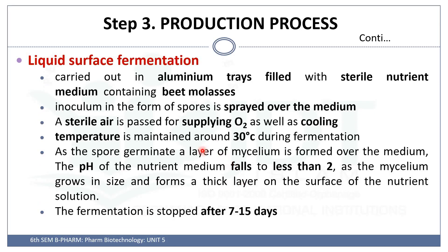The next method is liquid surface fermentation. As the name indicates, liquid media is used. These are carried out in aluminum trays filled with sterile nutrient media containing beet molasses. Spores are inoculated, and sterile air should be maintained for the supply of oxygen and for cooling. Temperature should be maintained around 30 degrees Celsius. During this process, there will be germination and formation of a layer of mycelium. The pH drops to less than 2.5, and fermentation is carried out for 7 to 15 days for optimal citric acid production.